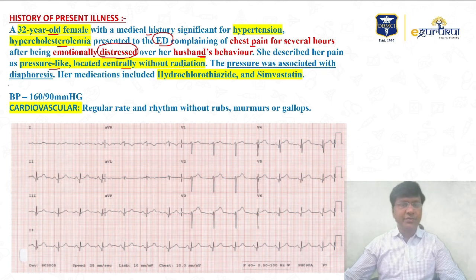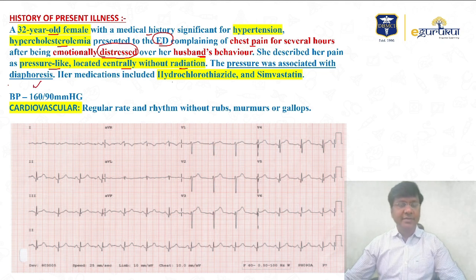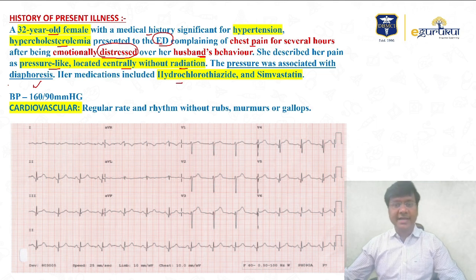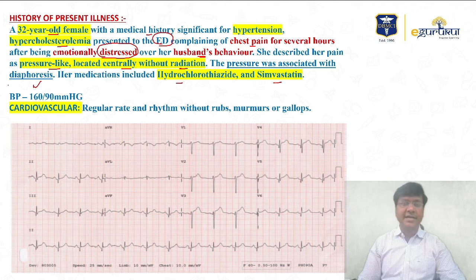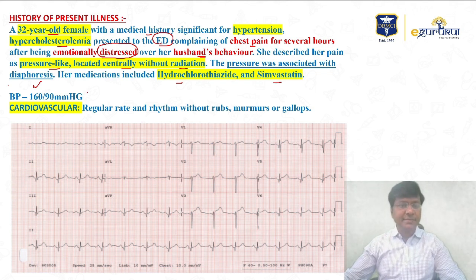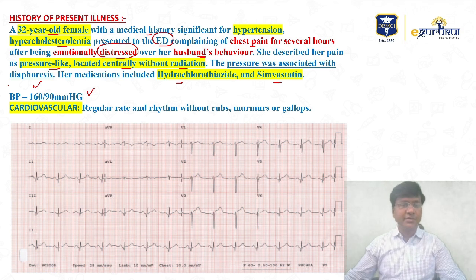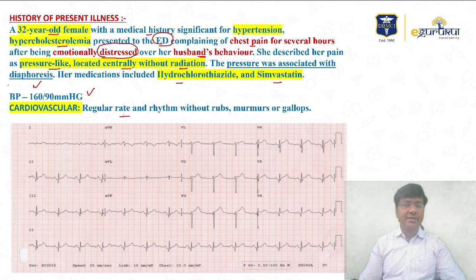She described her chest pain as pressure-like, located centrally without radiation, and associated with diaphoresis — that is, profuse sweating. Her medications included hydrochlorothiazide and simvastatin for hypercholesterolemia. On examination, blood pressure was 160/90 mmHg. Cardiovascular examination revealed regular rate and rhythm with no rubs, murmurs, or gallops.